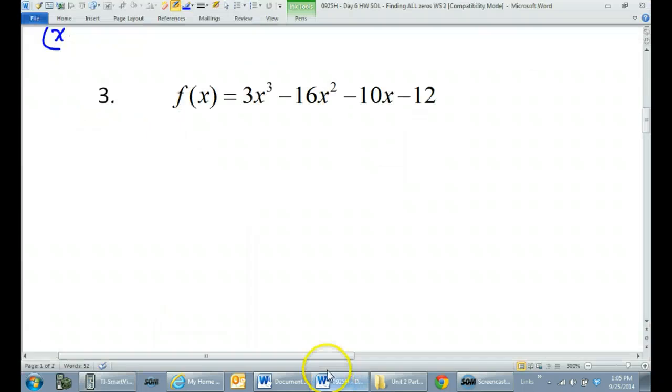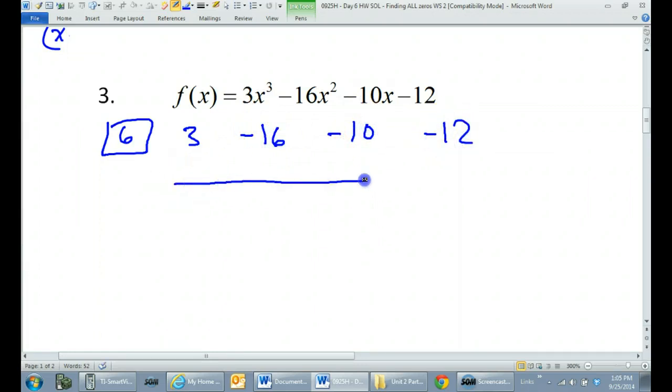So, let's go ahead and use that and see what happens. If I'm using this zero that I found at 6, I'm going to do synthetic division. So, 3, negative 16, negative 10, negative 12. Brilliant! I'm going to bring this down, that's 3. 3 times 6 is 18. Add these up, you get 2. 2 times 6 is 12. Add those up, that's another 2. 2 times 6 is 12 again. Of course, that makes zero.